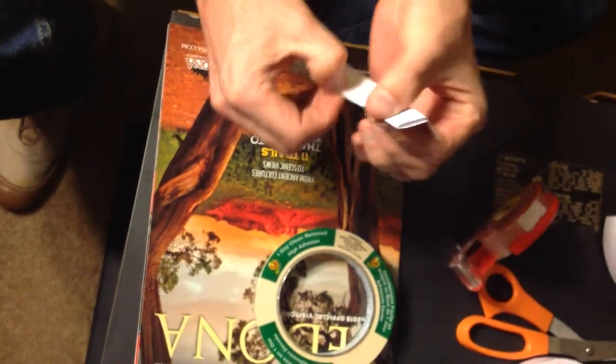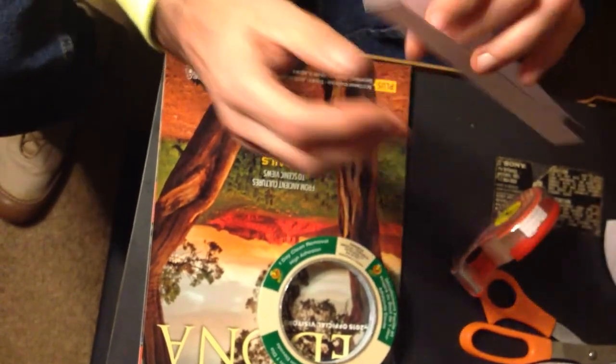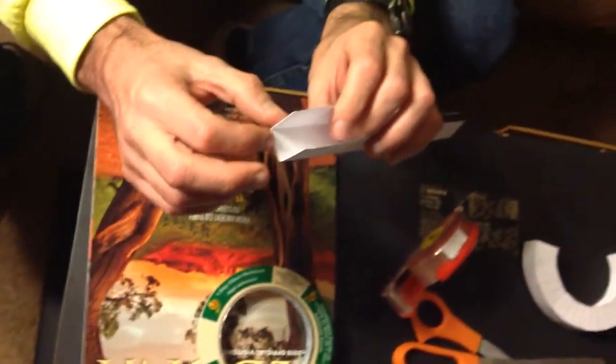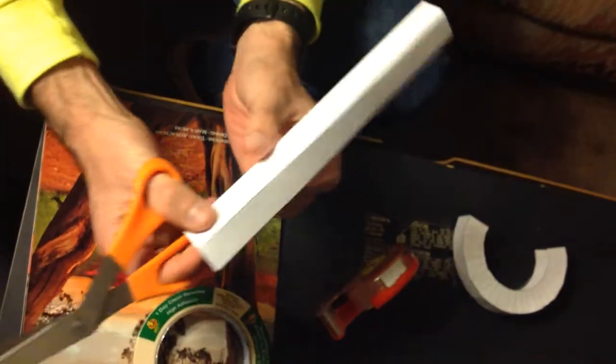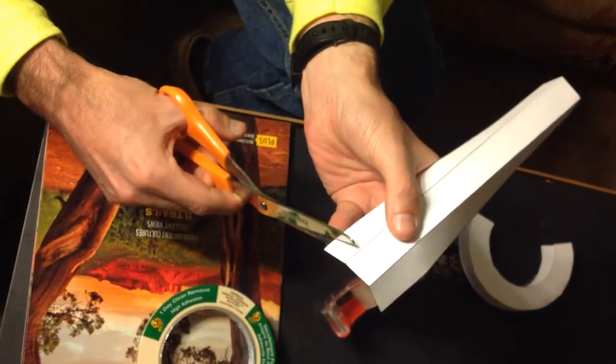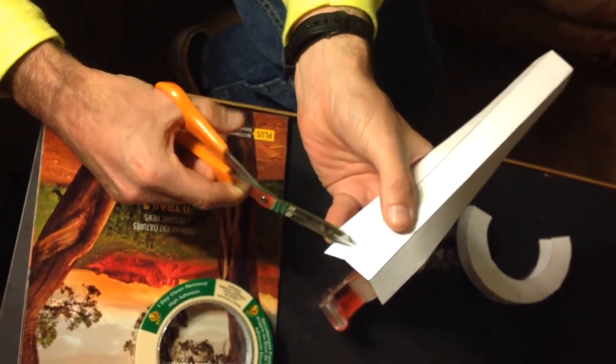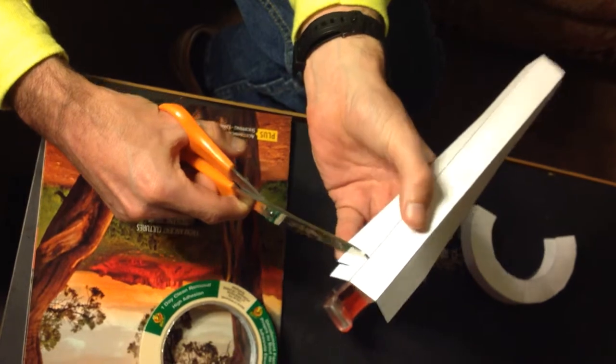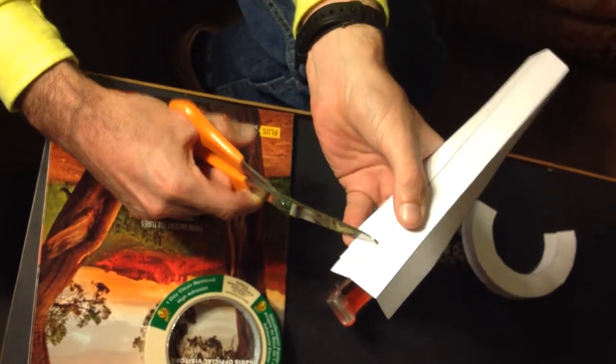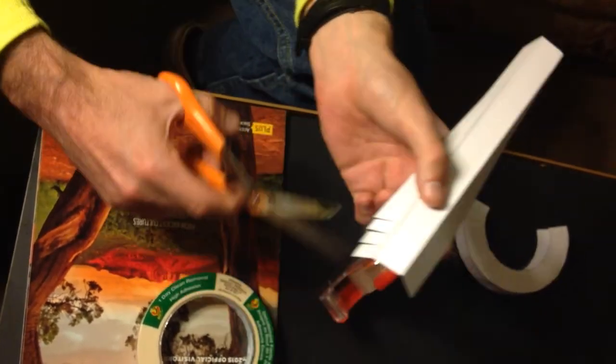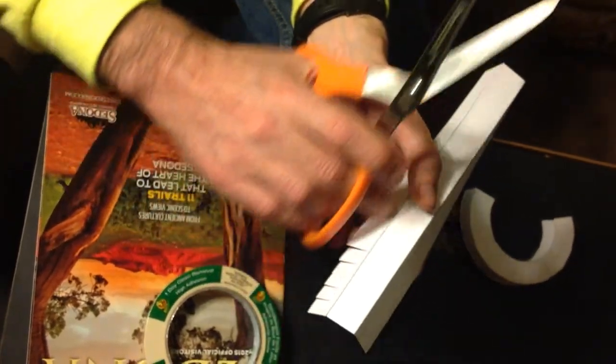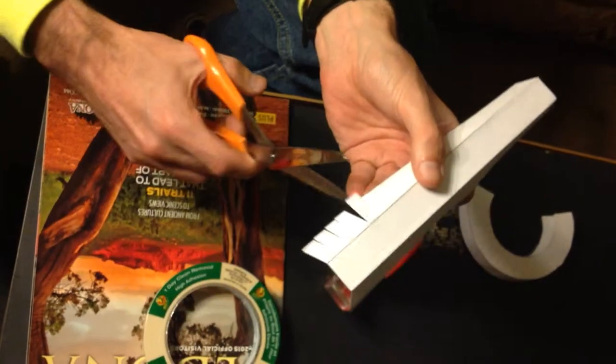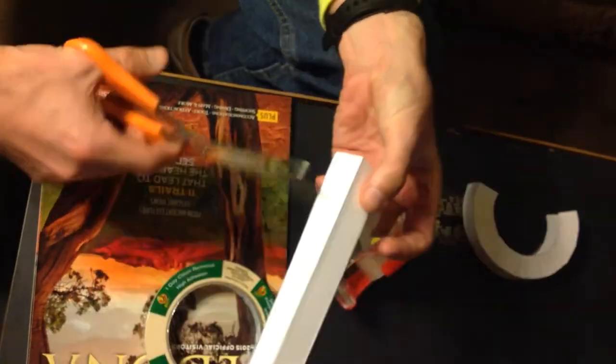Once we get a track with this square U shape, the next thing we do is we start cutting like this, up to this fold here, to this line. All the way along the whole track on one side and on the other side also.